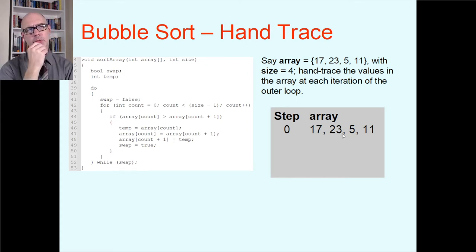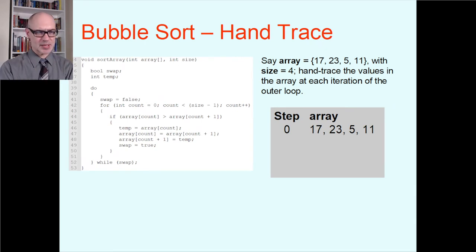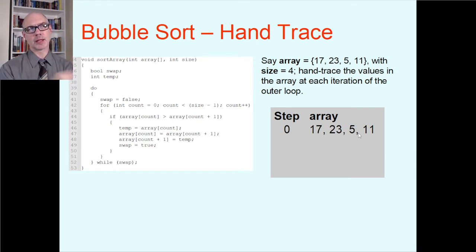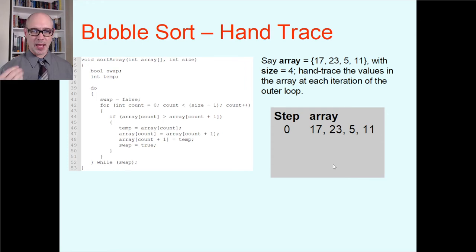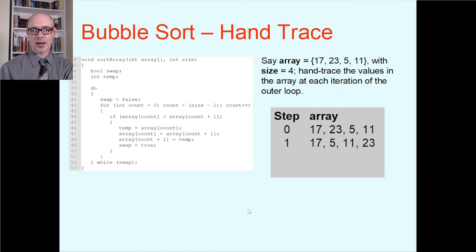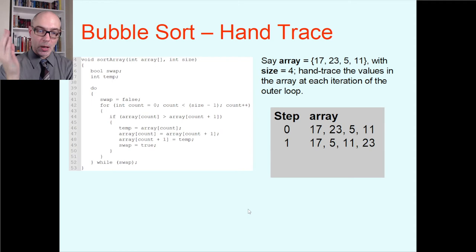At the end of the first iteration, the array is 17, 5, 11, 23. We just made some swaps, so we're going to go back and do the whole thing all over again.